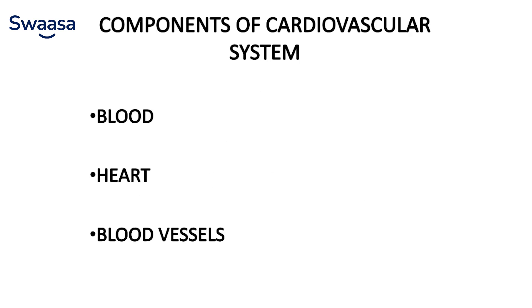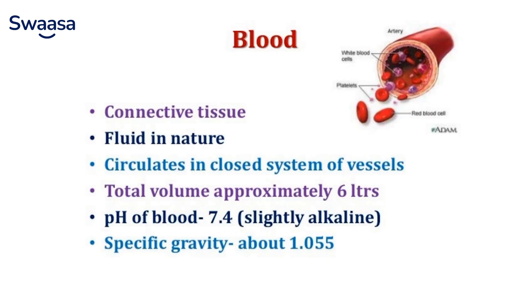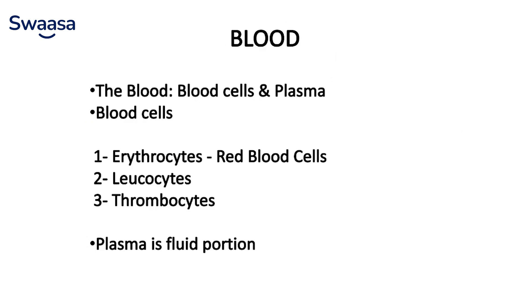Coming to the components of the cardiovascular system, it mainly contains blood, heart, and blood vessels. Blood is a connective tissue which is fluid in nature and circulates in a closed system of vessels. Total volume is approximately 6 liters, pH is 7.4 — that is slightly alkaline — and specific gravity is about 1.005. Blood contains blood cells and plasma. Blood cells are erythrocytes, leukocytes, and thrombocytes — also called red blood cells, WBCs, and platelets respectively — and plasma is the fluid portion.